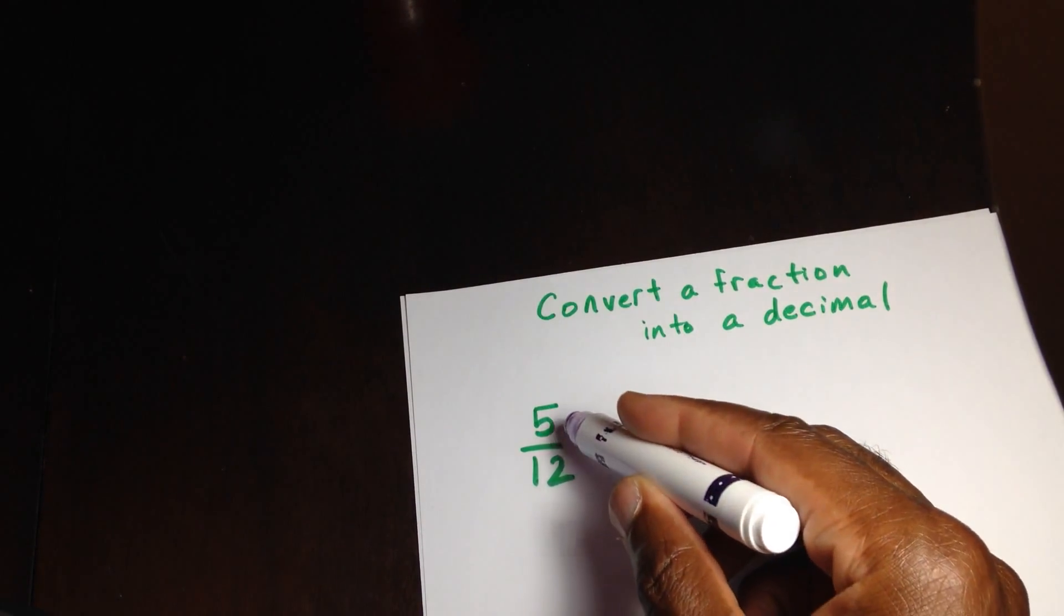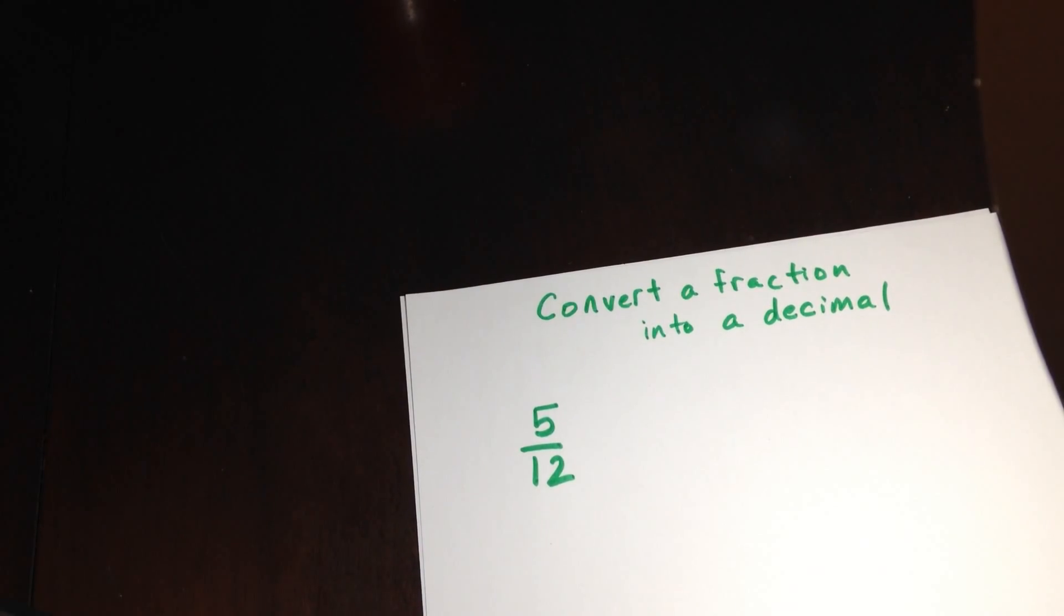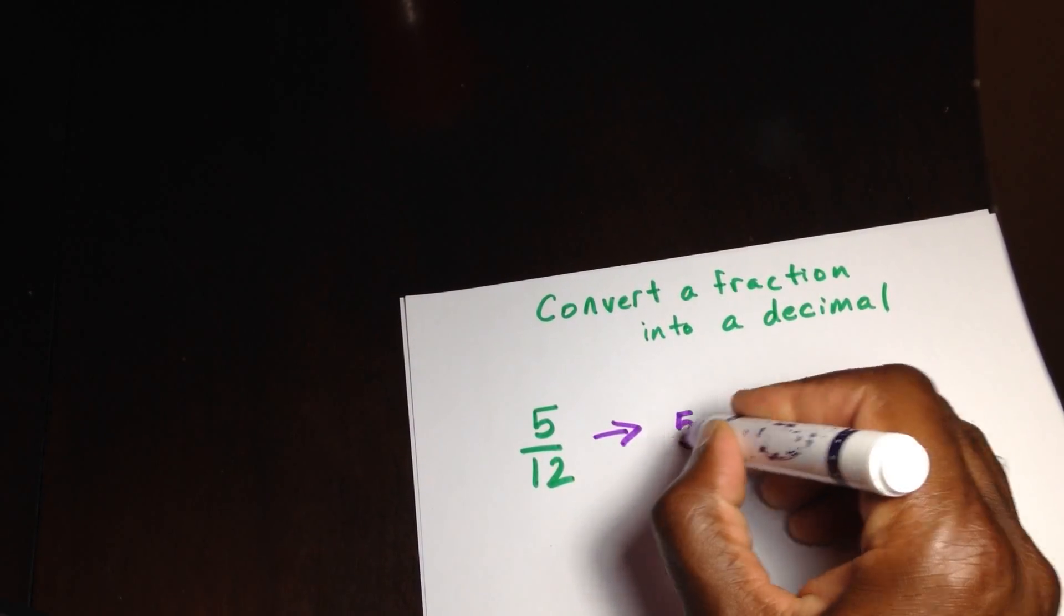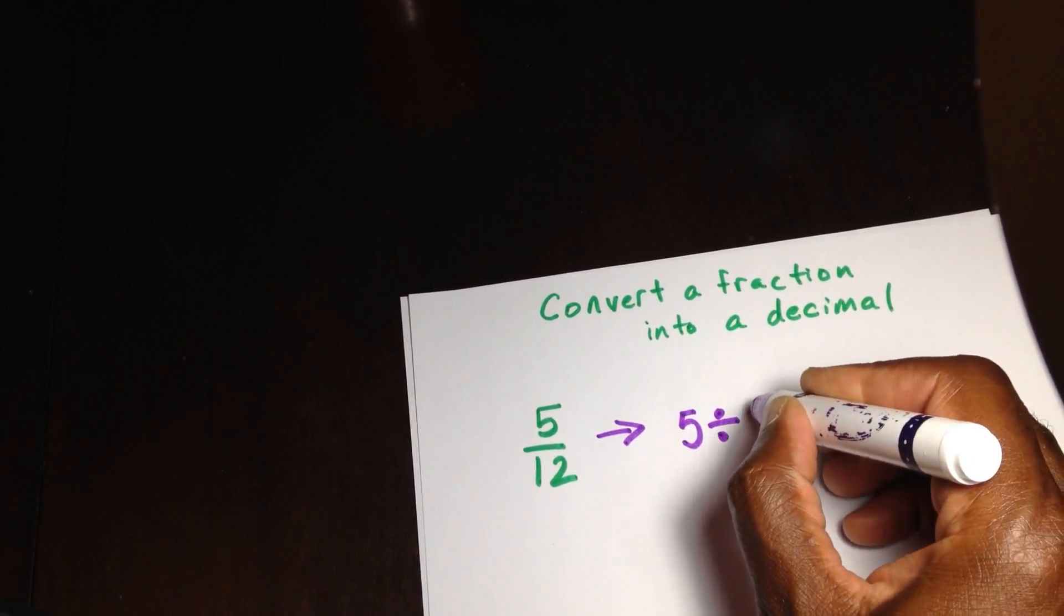Okay, let's begin with 5 twelfths. Now 5 twelfths can be seen as a division problem. In other words, I can see this as 5 divided by 12.